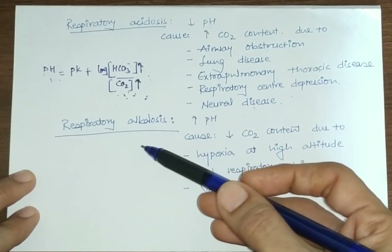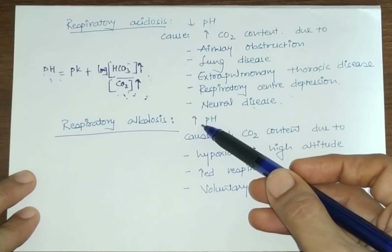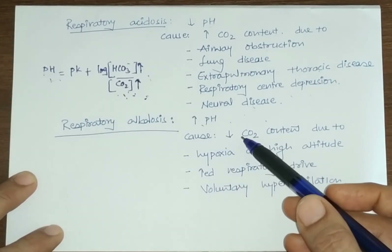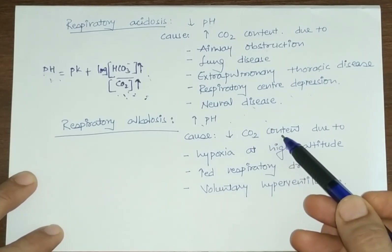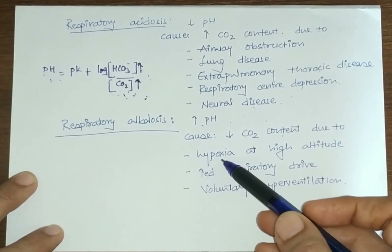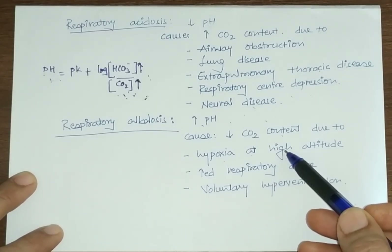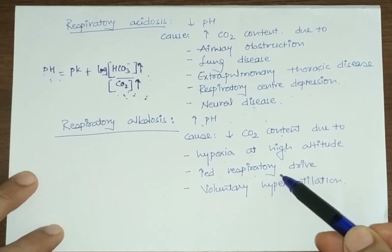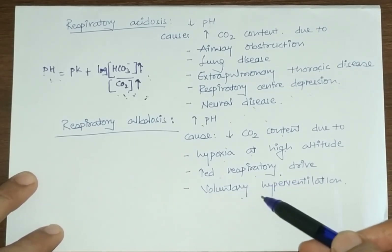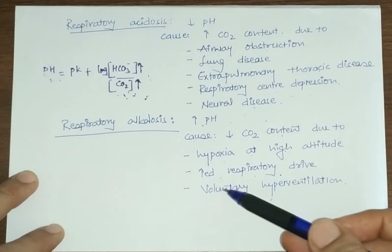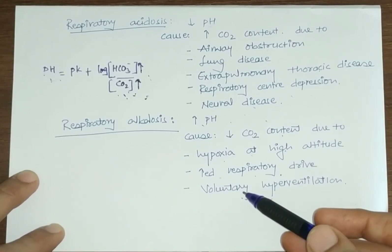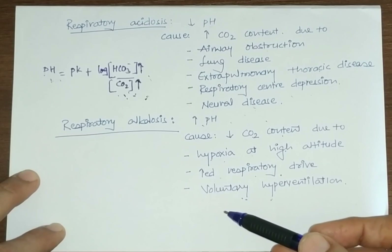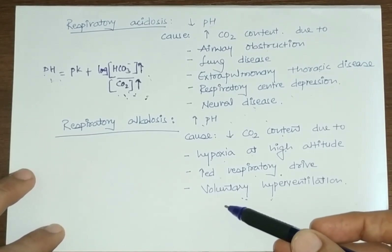In respiratory alkalosis, pH increases and H+ ion concentration decreases. It occurs when CO2 content decreases. Common causes include hypoxia at high altitude causing CO2 washout, increased respiratory drive leading to excess CO2 excretion, voluntary hyperventilation, salicylate intoxication causing hyperventilation, and hyperventilation in psychotic patients.